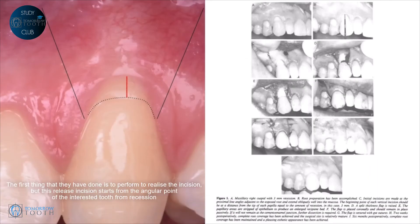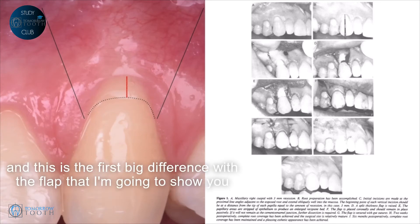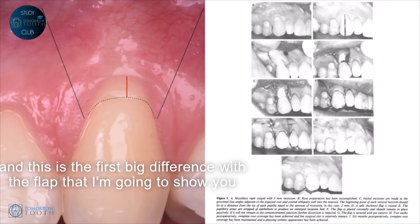The first thing that they did was to perform two release incisions, but these release incisions start from the angular point of the tooth with the recession. And this is the first big difference with the flap that I'm going to show you.